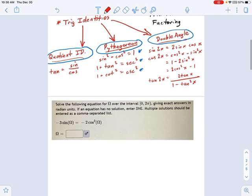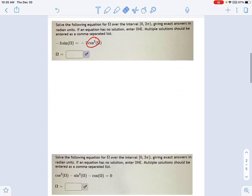And which one should I use here? I have a feeling, because of this cosine squared, I have a feeling that the Pythagorean identity is the way to go. So let's just try it out. Worst case scenario, it doesn't work, right? No big deal. So I'm going to say 3 sine omega over here on the left equals negative 2 times cosine squared. Now, what is cosine squared? That's just 1 minus sine squared omega. Remember your Pythagorean identity substitution.